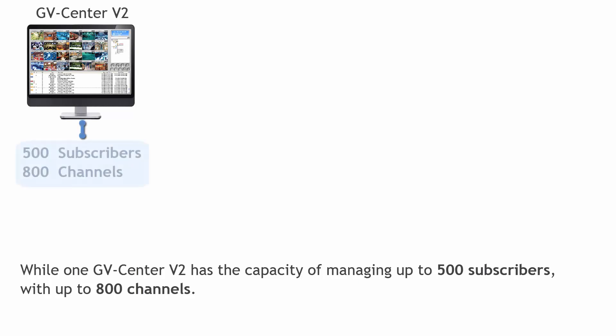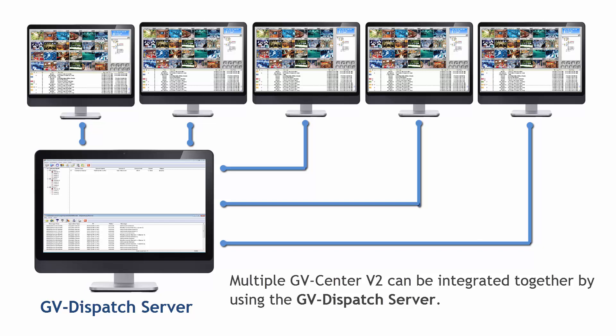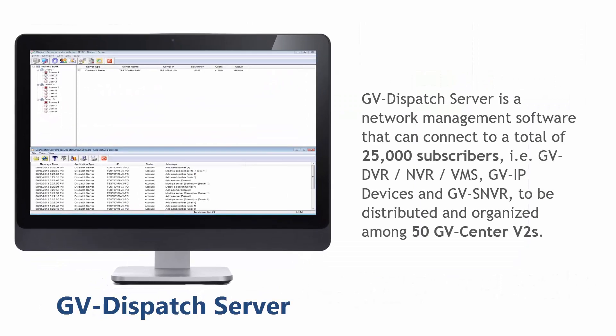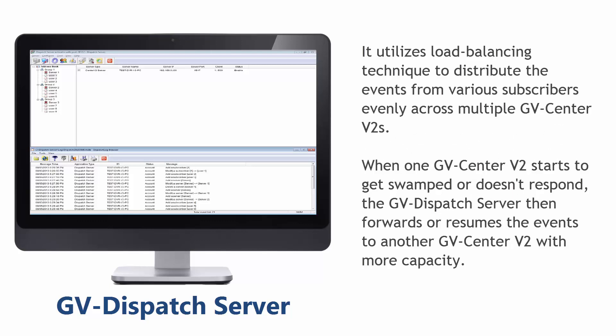While one Center V2 has the capacity of managing up to 500 subscribers with up to 800 channels, multiple Center V2s can be integrated together by using the GV Dispatch Server. The Dispatch Server is a network management software that can connect to a total of 25,000 subscribers distributed among 50 Center V2s. It utilizes load balancing to distribute events evenly across multiple Center V2s. When one Center V2 becomes overwhelmed or doesn't respond, the dispatch server forwards or resumes the events to another Center V2 with more capacity.